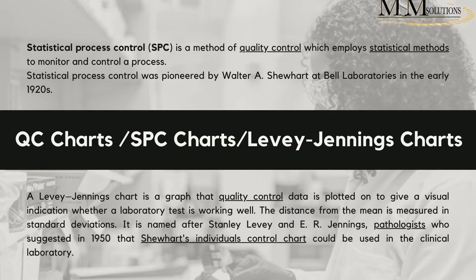What are QC charts? Quality control charts are sometimes also called SPC charts or even Levy-Jennings charts. SPC stands for statistical process control — a method of quality control which employs statistical methods to monitor and control a process. These statistical process controls were first pioneered by Walter A. Shewhart at Bell Laboratories in the early 1920s. In the lab, a Levy-Jennings chart is a graph that quality control data is plotted on to give a visual indication of whether a laboratory test is working well.